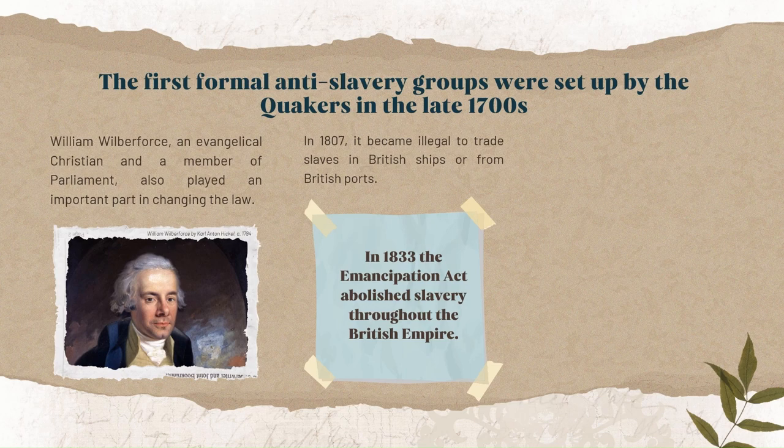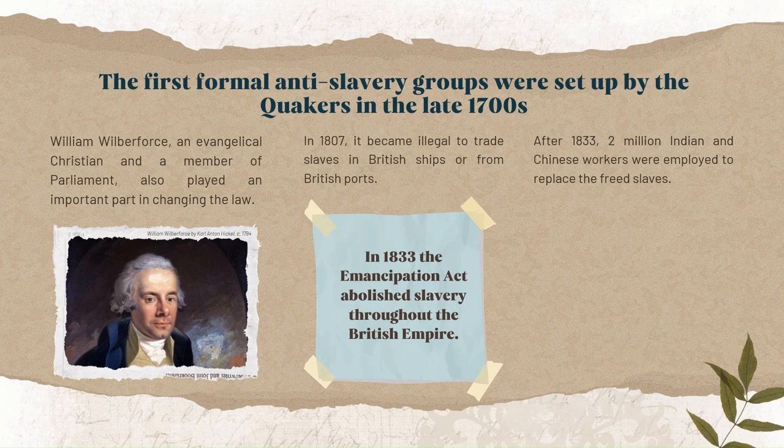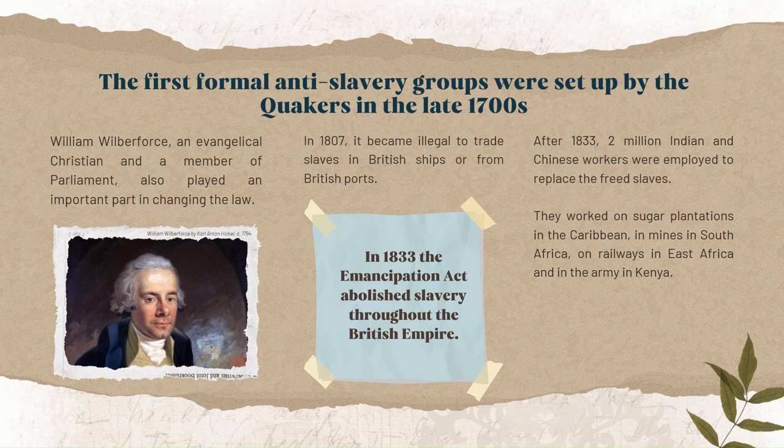After 1833, two million Indian and Chinese workers were employed to replace the freed slaves. They worked on sugar plantations in the Caribbean, in mines in South Africa, on railways in East Africa and in the army in Kenya.